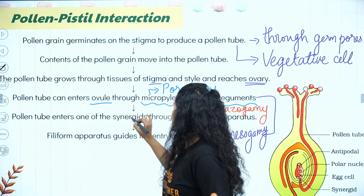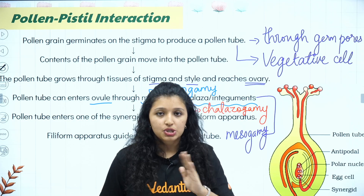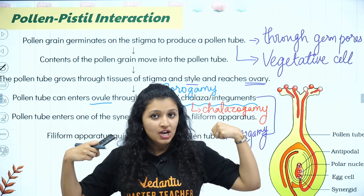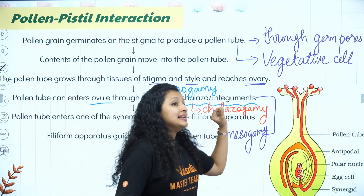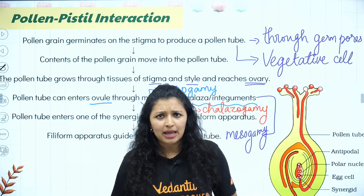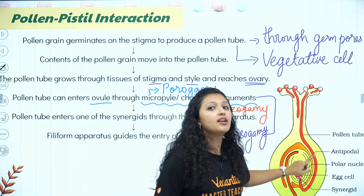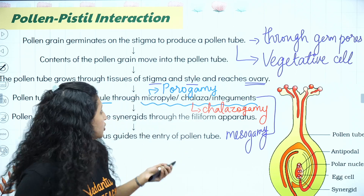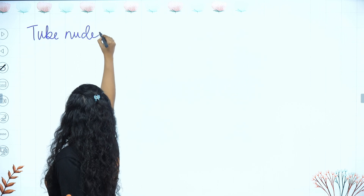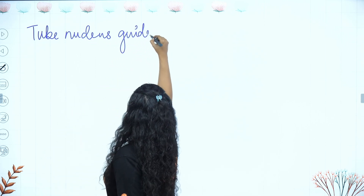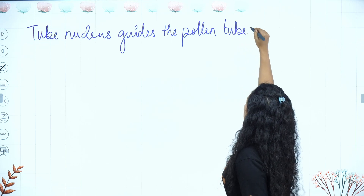Most commonly, the pollen tube enters one of the synergid cells through the filiform apparatus. There is the egg apparatus consisting of two synergid cells and one egg cell. The pollen tube does not go directly to the egg cell — it first enters one synergid cell. The tube nucleus guides the pollen tube towards the ovary. That is why we call it the tube nucleus — it navigates the pollen tube growth in the right direction.